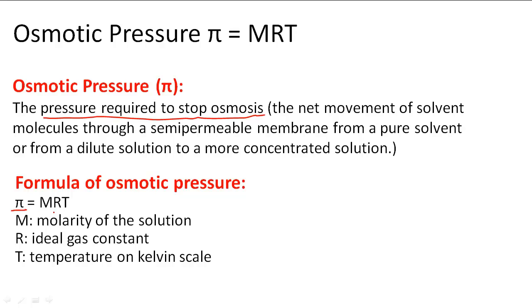The symbol for osmotic pressure equals MRT. The M stands for the molarity of the solution, R stands for the ideal gas constant, and T stands for the temperature on the Kelvin scale.